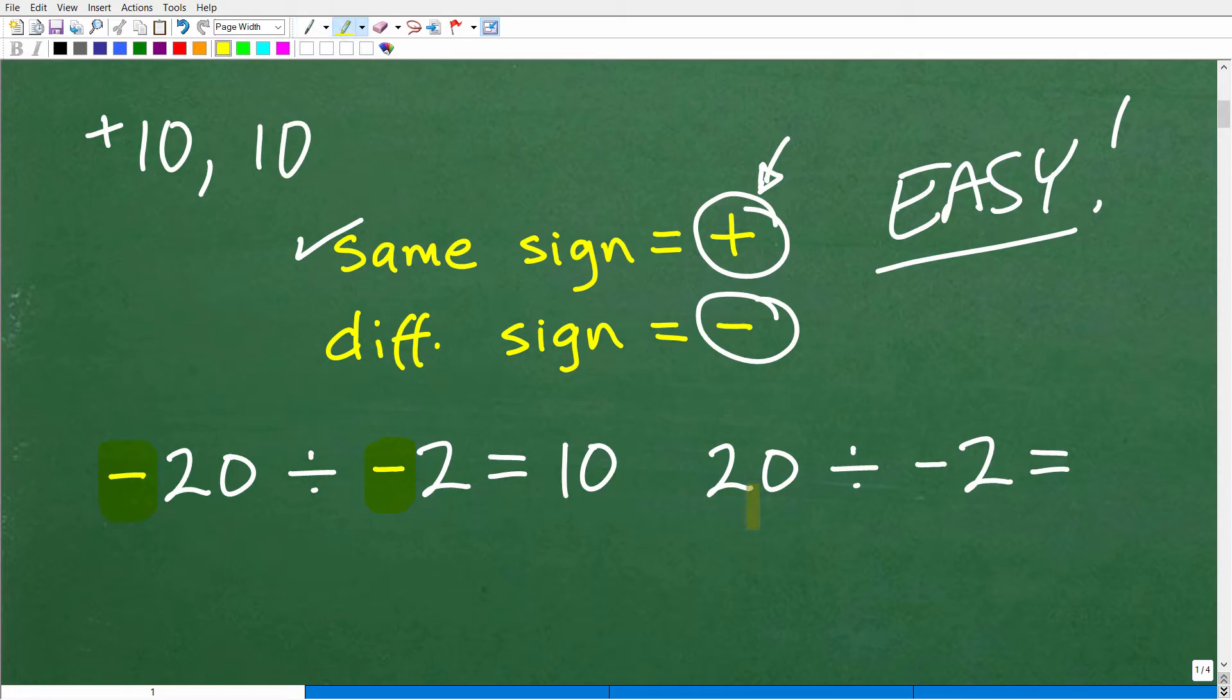So, let's go ahead and take a look at positive 20 divided by negative 2. So, what's the signs here? Well, this is a positive, this is a negative. So, we have different signs. So, our final answer is going to be negative. So, 20 divided by 2 is 10. But the sign of my answer is going to be negative. So, that is it.